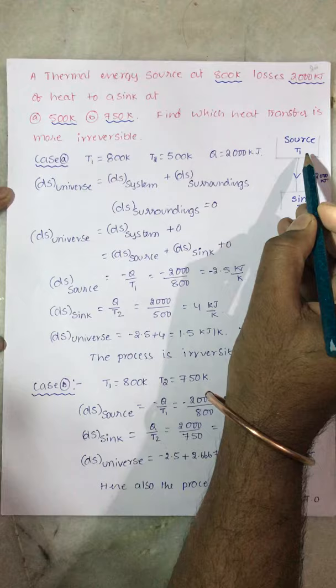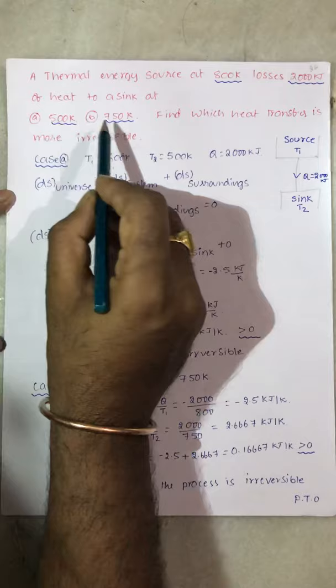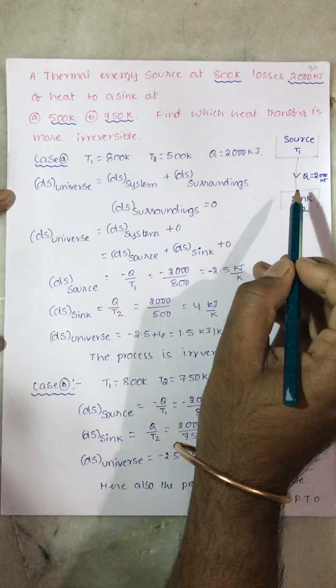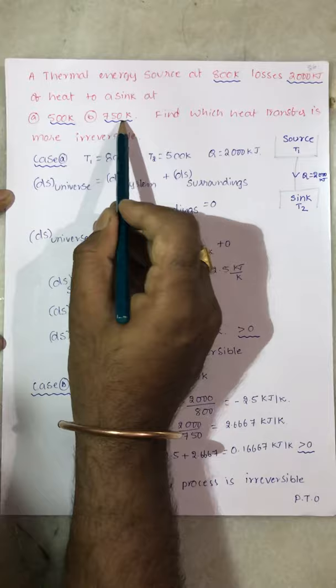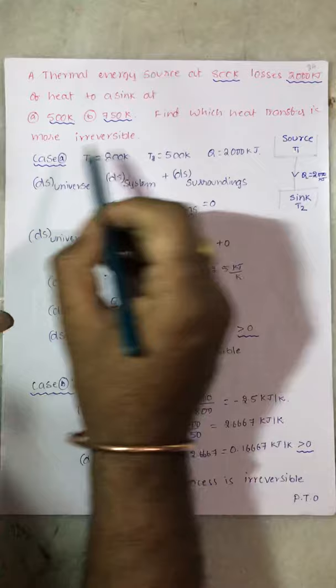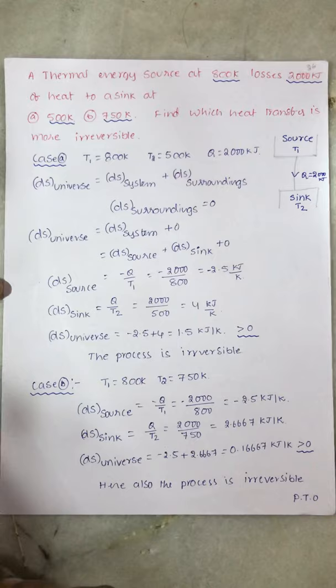The source is at T1, that is 800K. The sink has two given temperatures: 500K and 750K. First, consider Case A where sink temperature T2 is 500K — we need to calculate the change in entropy of the universe. Then for the second sink temperature of 750K, we also calculate the change in entropy. Whichever process has more entropy change is the more irreversible process.